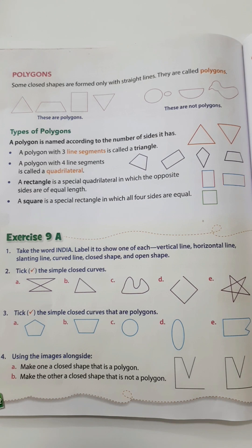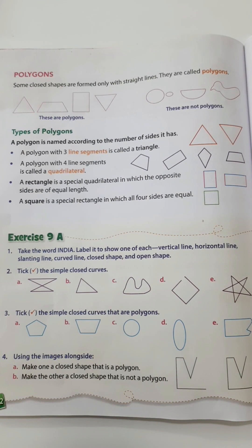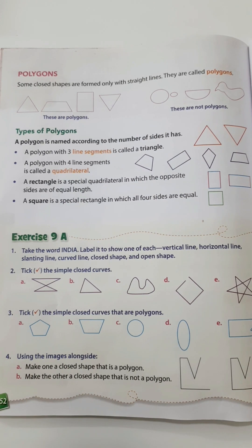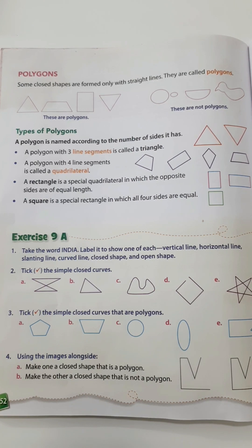A rectangle is a special quadrilateral in which opposite sides are equal — two sides are equal and the other two sides are equal. A square is also a special rectangle in which all four sides are equal.